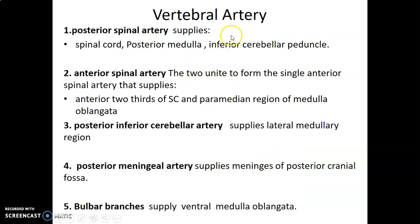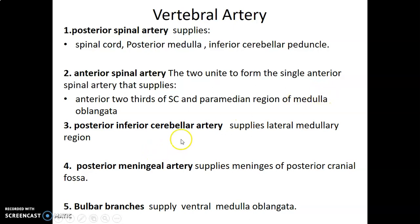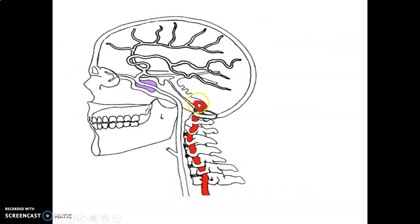Starting with the vertebral artery: it originates from the subclavian, first part of the subclavian artery. It gives posterior spinal artery, which supplies the spinal cord, the posterior part of the medulla oblongata, and the inferior cerebellar peduncle. Then we have anterior spinal arteries — there are two, and they usually unite to form the single anterior spinal artery supplying the anterior two-thirds of the spinal cord, as well as the paramedian region of the medulla oblongata. Then we have posterior inferior cerebellar artery that supplies the lateral medullary region, posterior meningeal artery that supplies the meninges within the posterior cranial fossa, and bulbar branches. The vertebral artery passes through the foramina within the transverse processes of the cervical vertebra to eventually enter the cranium through foramen magnum.